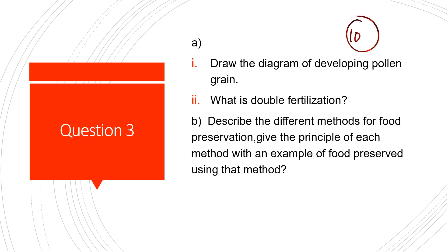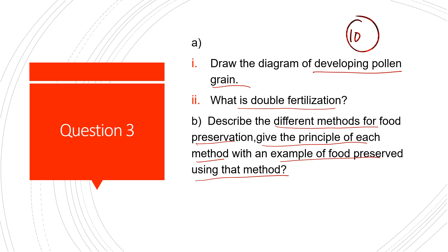Question 3: Draw the diagram of a developing pollen grain — show the pollen tube and all related structures. What is double fertilization? Describe the different methods of food preservation, giving the principle of each method and an example of food preserved using that method.